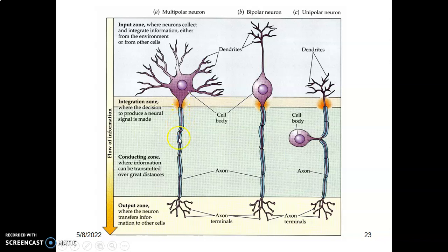Myelin is just for insulation so that you improve conduction and transmission of the signal, so that you don't lose the signal. It increases the speed of conduction because of the insulation. That's the myelin sheath.